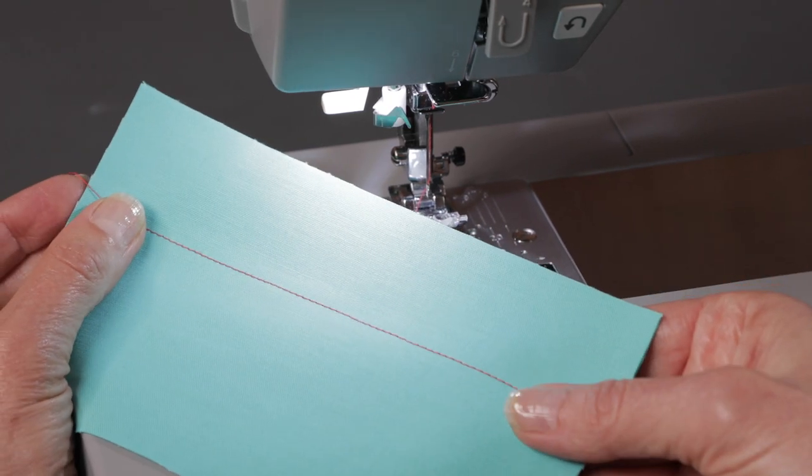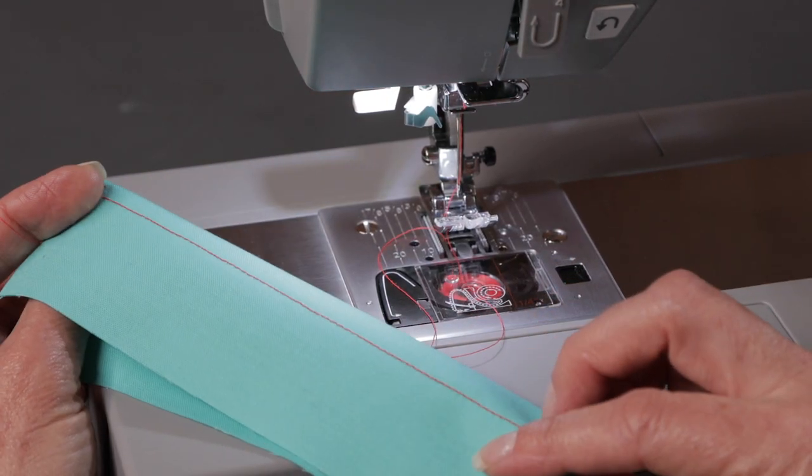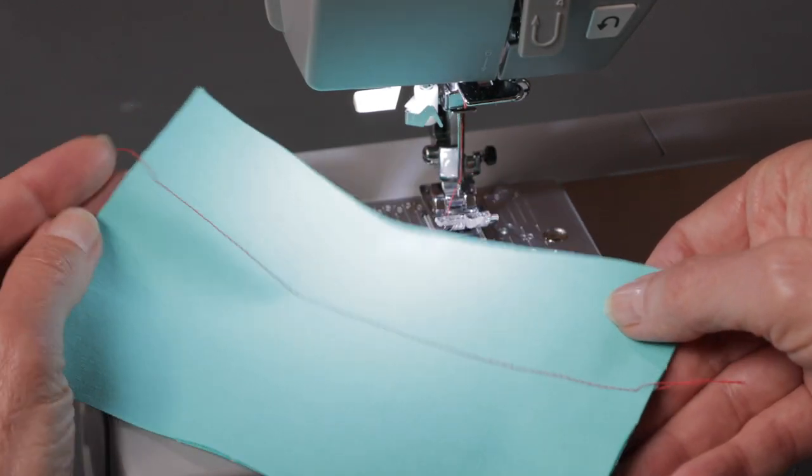There's our stitch. It looks good on the top side. Looks good on the back side. So now we know that we've threaded the machine correctly.